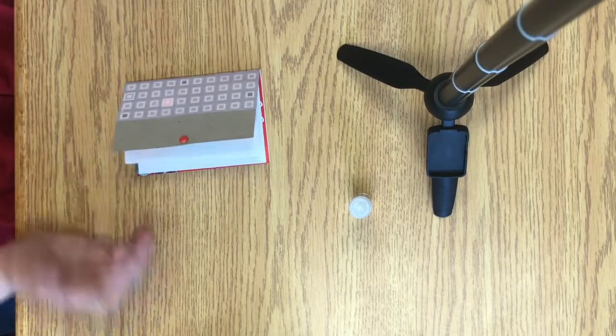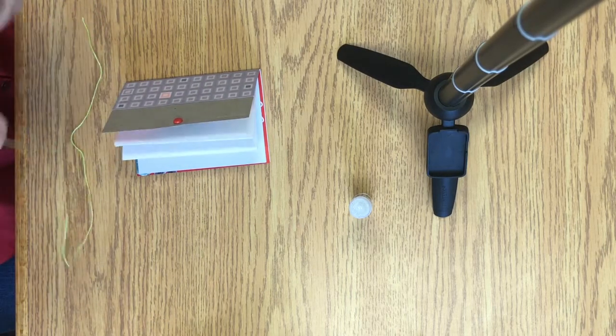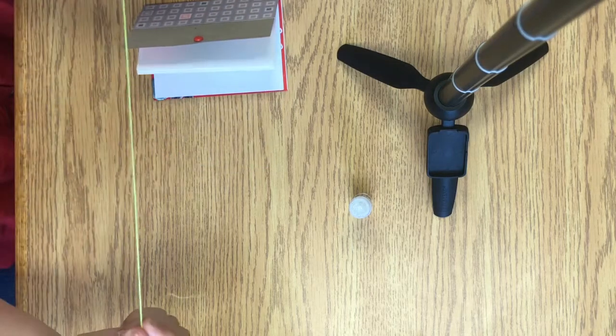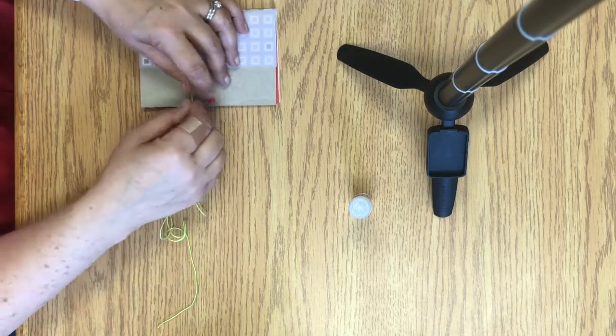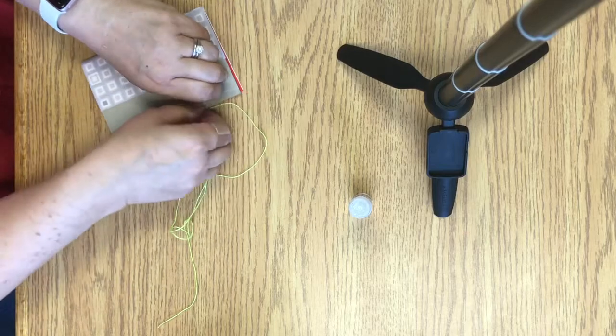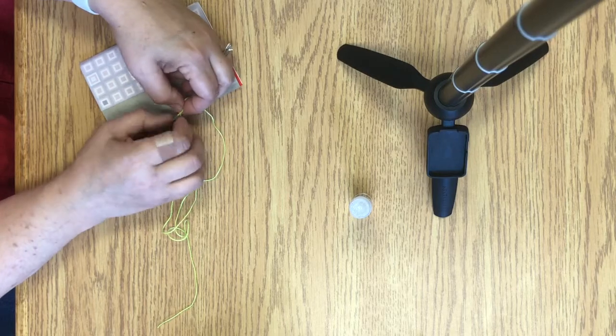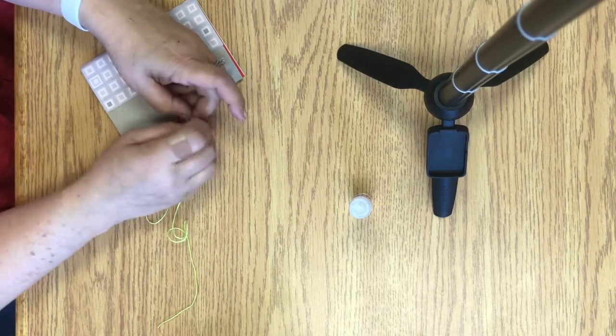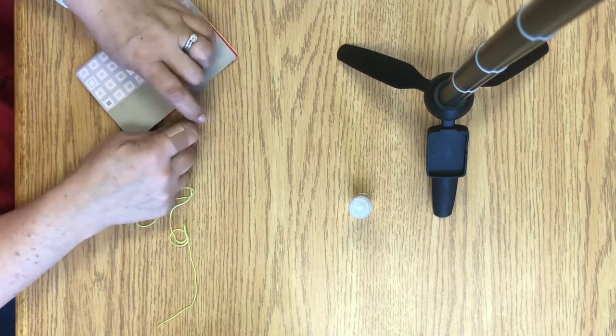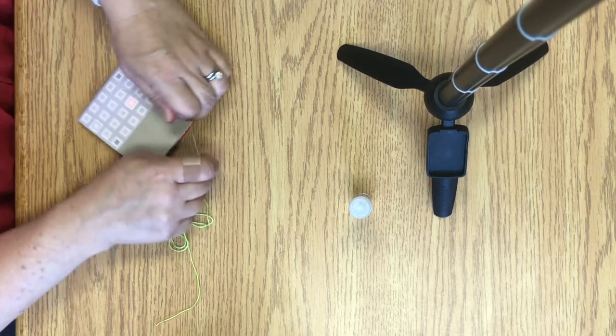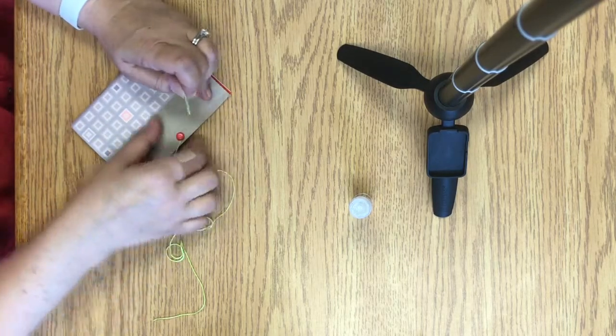Now all we want to do is just to add the floss. So I'm going to take a thread. This embroidery floss works well. You can also use yarn or a thin ribbon. And I'm just going to tie one end to the brad. Just tie it in a little knot. Okay, so that should be pretty secure. And I'm just going to clip off the extra piece so that that doesn't show.